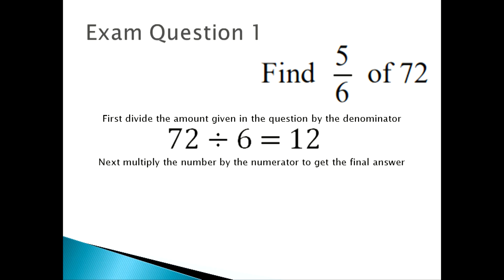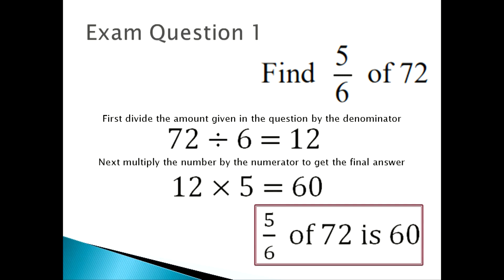Next, you multiply the number by the numerator to get your final answer. So, 12 times 5, and that's 60, which means that 5 sixths of 72 is 60.